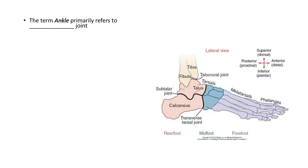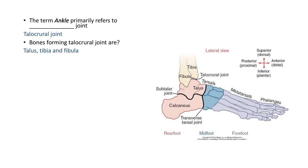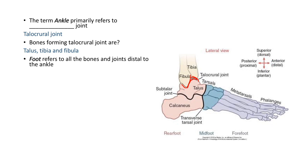The term ankle primarily refers to the joint called the talocrural joint. The talocrural joint is formed by the bones: talus, tibia, and fibula. The talocrural joint is formed between the upper articulating surface or dome of the talus, also called the trochlear notch of the talus, and parts of the fibula and tibia. This is called the ankle joint or talocrural joint. The foot refers to all the bones and structures distal to the talocrural joint.